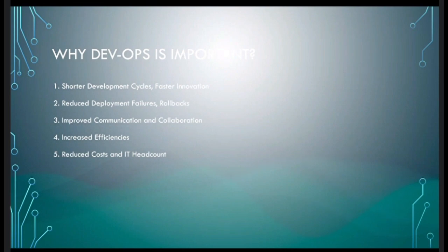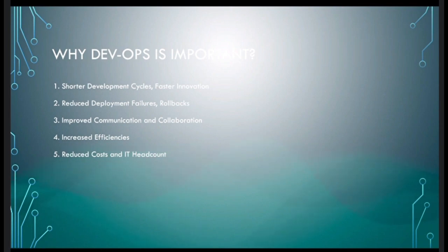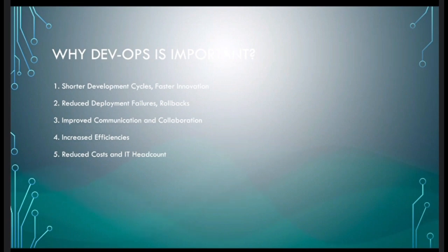If something fails, we have rollback capability. For example, if version 9.1 causes issues and the application goes down, we roll back to version 9.0, which was working previously. The application comes back up on the previous version while we fix the issue and come back with a hotfix.